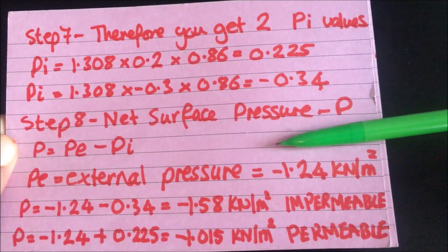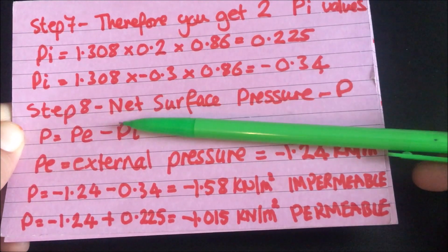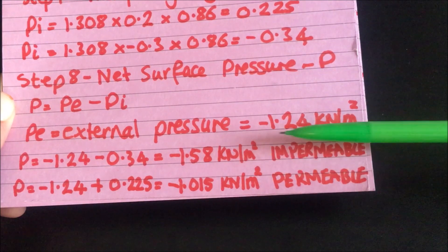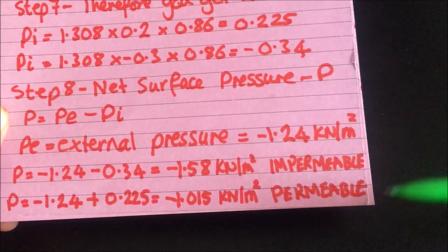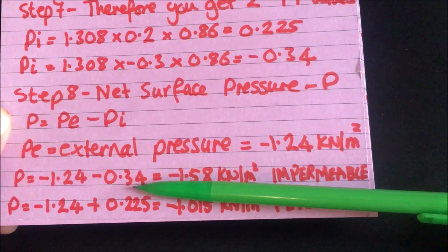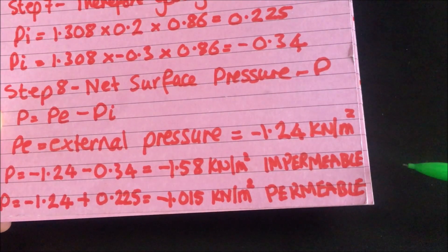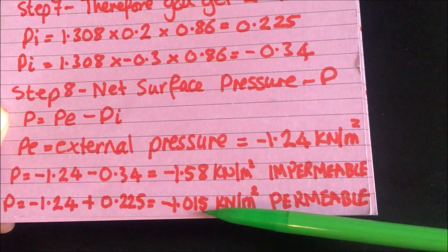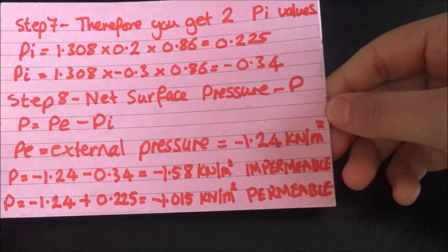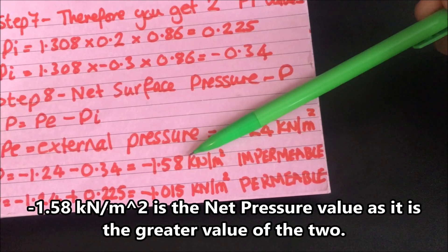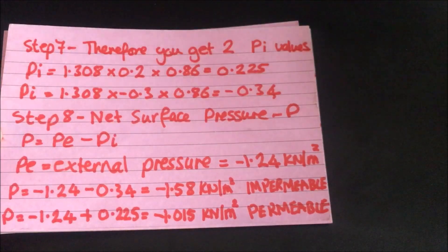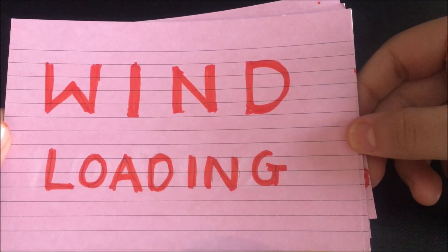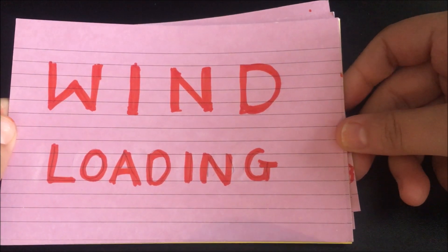The next step is to work out the net surface pressure. We have PE and we have PI. The net surface pressure equals PE minus PI — external minus internal. Previously we worked out the external pressure as negative 1.24 kilonewtons per meter squared. Substituting in our PE and PI values, we get the impermeable net value of negative 0.158 kilonewtons per meter squared and the permeable net value of negative 1.015 kilonewtons per meter squared. Therefore the governing net pressure value is negative 1.58 kilonewtons per meter squared. And that is how you determine the wind loading. For any questions, comment down below and I'll get back to you. Thank you very much for watching.